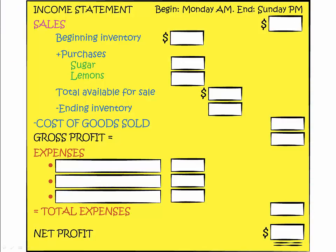Let's try to make an income statement. You can print an empty income statement template by going to Google Drive and looking for the income statement document. I strongly recommend you try to build it yourself before moving on so you can discover where you struggle. You will have to build a balance sheet, an income statement, and a cash flow statement for your accounting homework and during the final exam, so you should get all the practice you can.